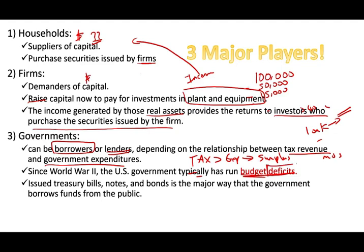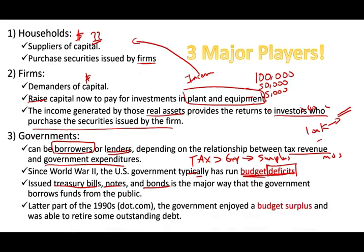Historically, since World War II, we have mostly had a deficit — meaning we could not collect enough tax revenue to cover expenditure. When the government has a deficit, it issues treasury bills, notes, and bonds — in simple language, they borrow money to finance themselves. In the late 1990s during the dot-com era under Clinton, the government enjoyed a brief two to three years of budget surplus and was able to pay down some outstanding debt. Those are the three major players.